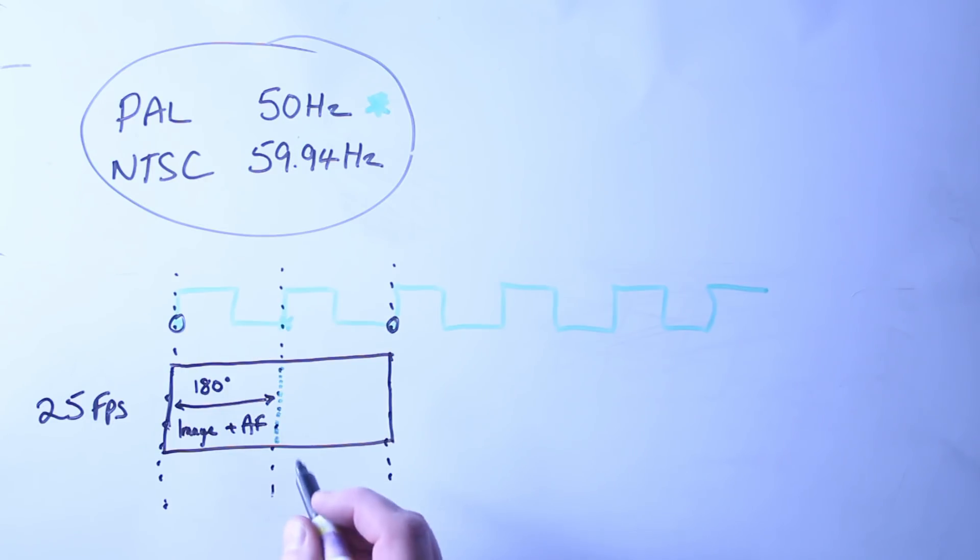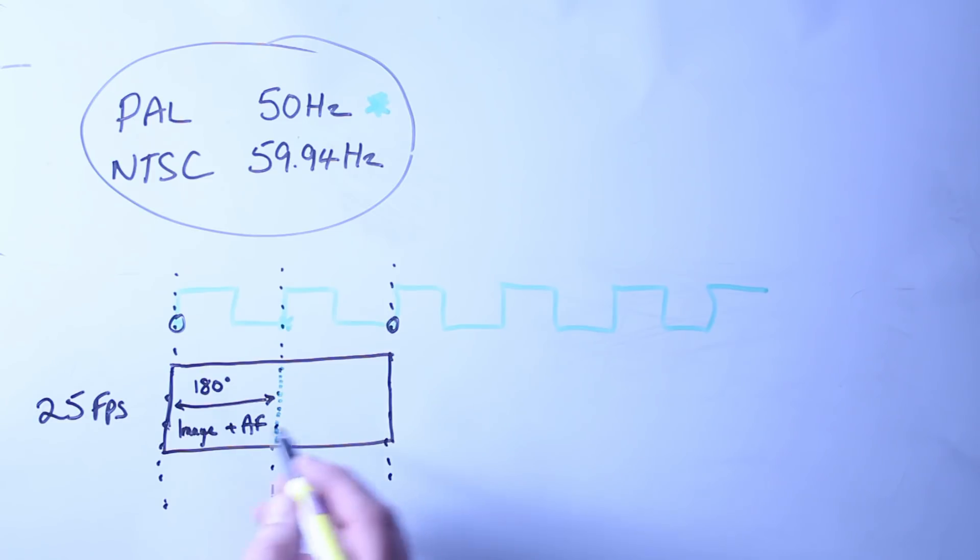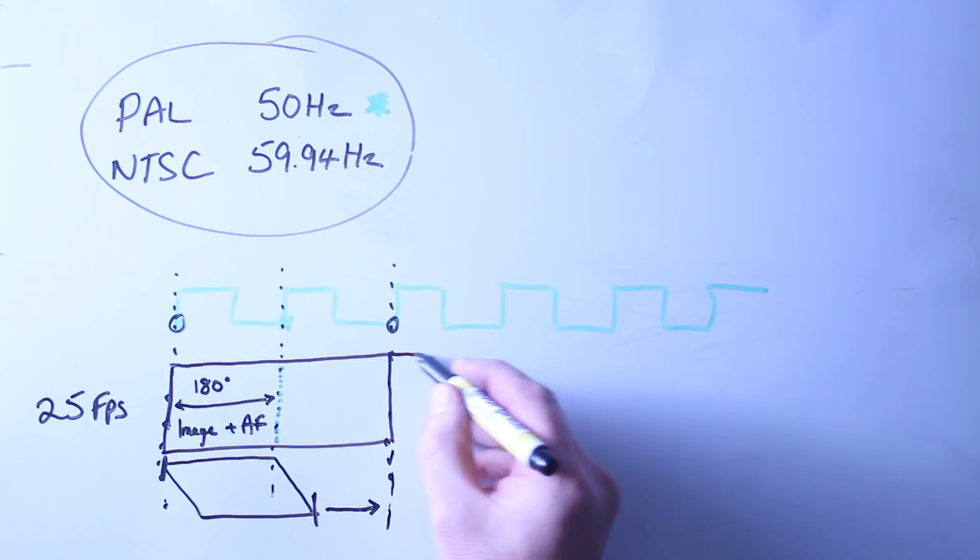So my 180 degree shutter lasts only that amount of time. In that time we get the image plus the AF. The image is captured and the AF cycle is run as well. Now unfortunately, because images within a digital camera aren't a snapshot, they're actually a scan, rather than the image being square, we can draw it as a parallelogram. Your 180 degree shutter takes a little bit longer than half the available time.